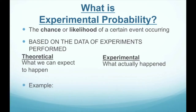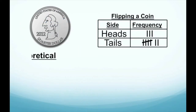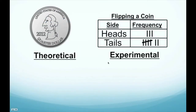So for example, let's talk about the probability of flipping a coin. We're talking about theoretical probability versus experimental probability. Here we have data from flipping a coin. We flip a coin ten times total — we landed on heads three times, and we landed on tails seven times.